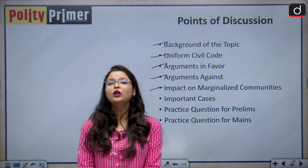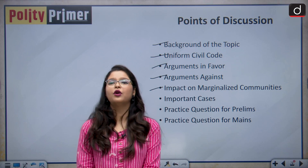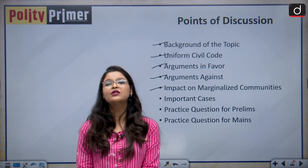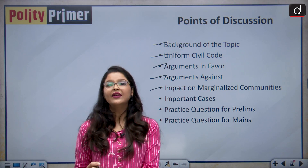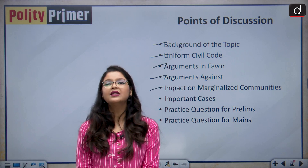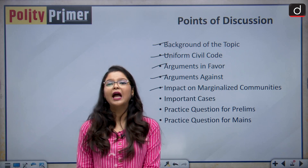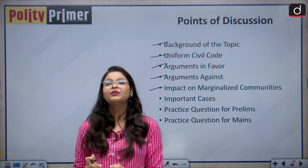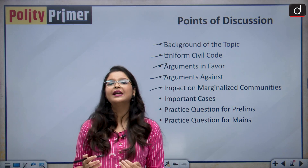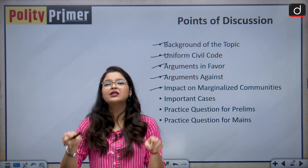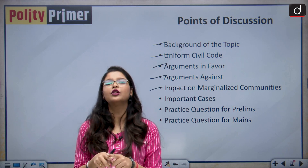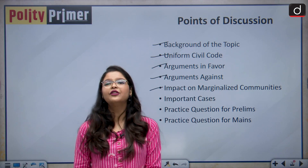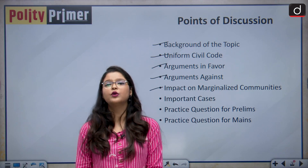What do we understand by this term Uniform Civil Code? In simple terms, the Uniform Civil Code means one law for one nation. 75 years since our independence, our personal laws are very fragmented in nature. They differ from religion to religion and this causes a lot of problems. In India, all of the laws are applicable throughout the territory of India but this is not the case with personal laws — they vary differently and it causes a huge problem.